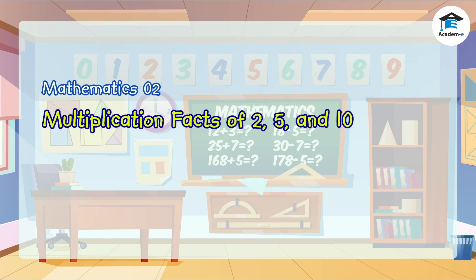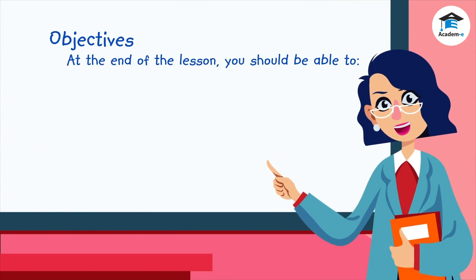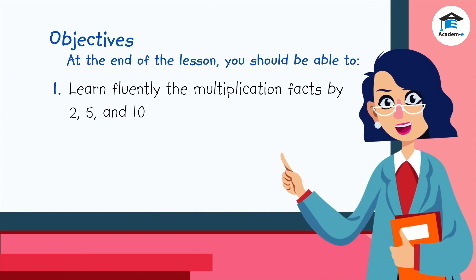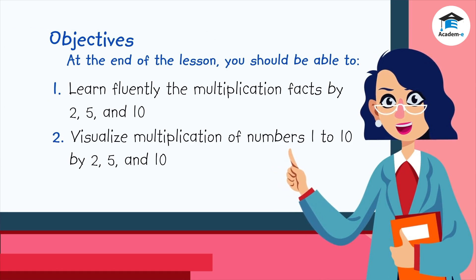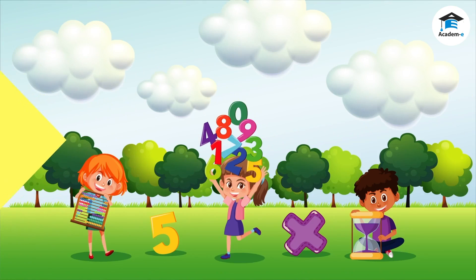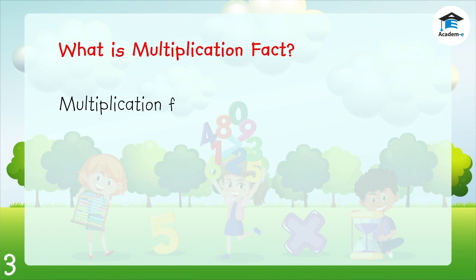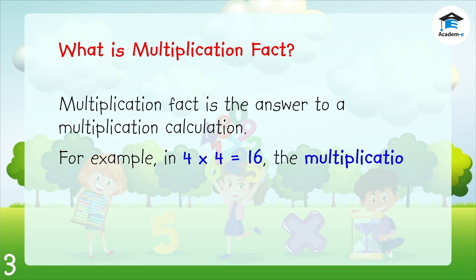Mathematics 2: Multiplication Facts of 2, 5, and 10. Objectives: at the end of the lesson you should be able to learn fluently the multiplication facts by 2, 5, and 10, and visualize multiplication of numbers 1 to 10 by 2, 5, and 10. What is a multiplication fact? A multiplication fact is the answer to a multiplication calculation. For example, in 4 times 4 equals 16, the multiplication fact is 16.